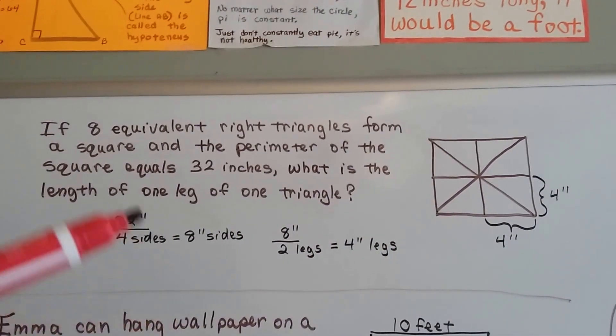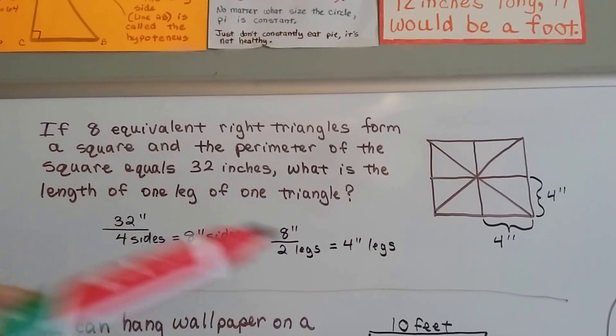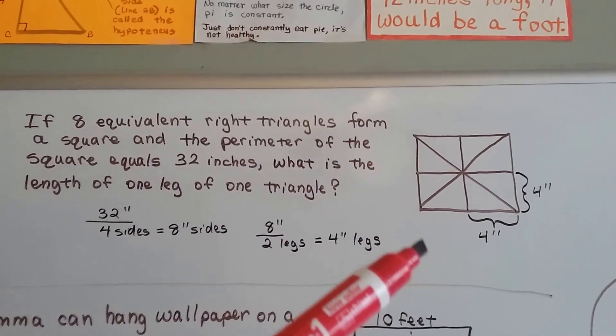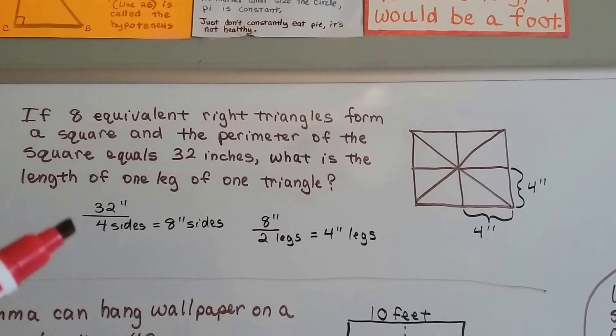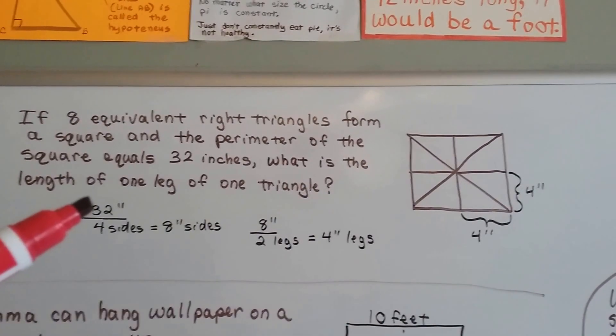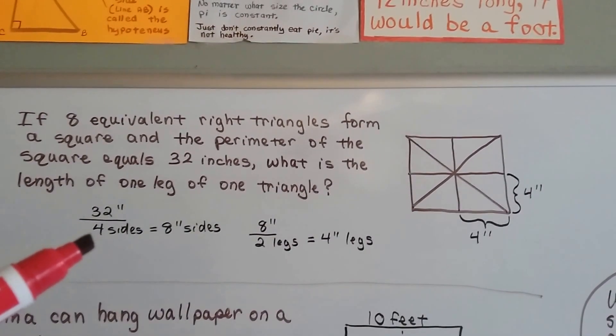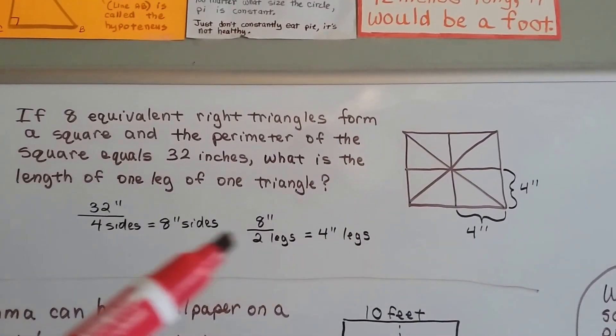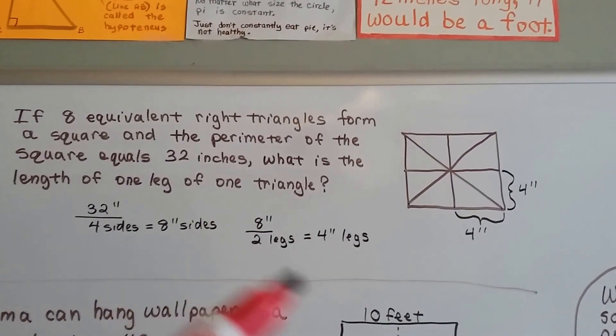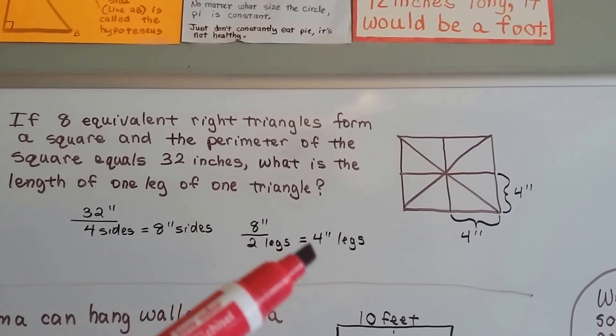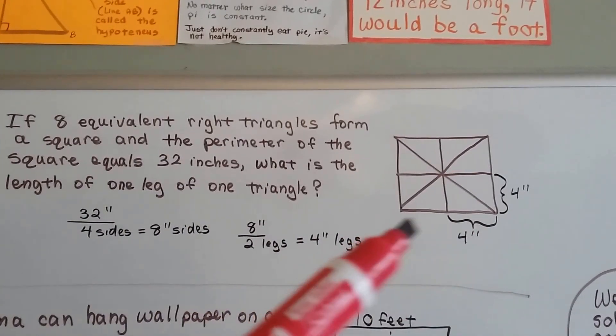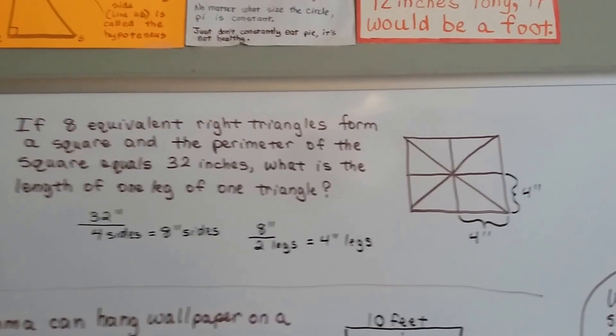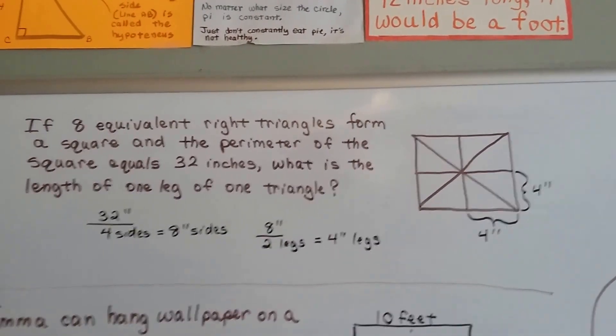Well, if the perimeter is 32 inches all the way around, and it's a square, that means each side is equal. Because it's a square. And 8 inches would be 32 inches divided by that 4 sides. So now we know each side is 8 inches, and if a triangle has 2 legs, then that means there's going to be 4 inch legs. So we know the answer is 4 inches. Drawing the diagram can help us.